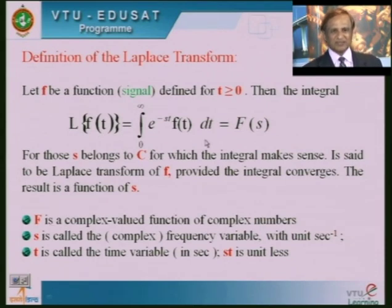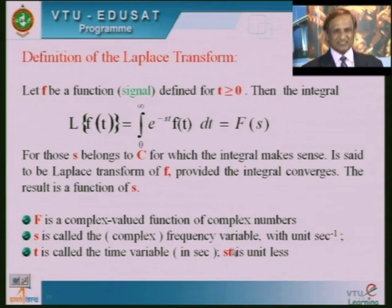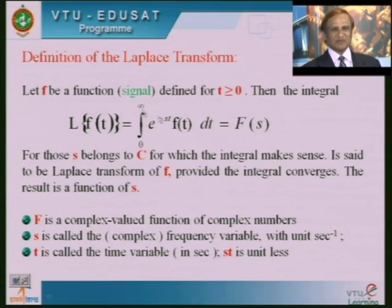Regarding units: F is a complex-valued function of complex numbers. S is called the complex frequency variable with unit sec⁻¹. T is called the time variable in seconds. The product st is unitless — when you multiply s (sec⁻¹) by t (seconds), there is no unit for st.